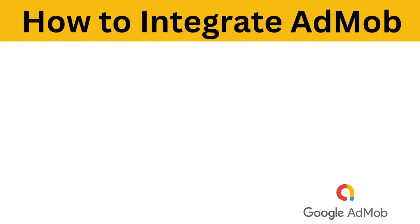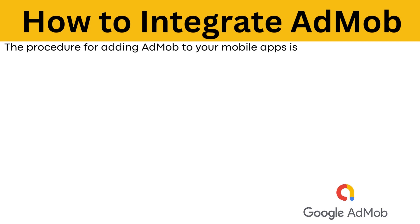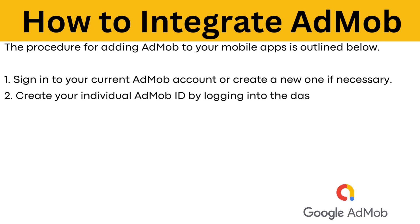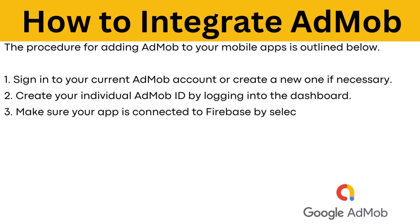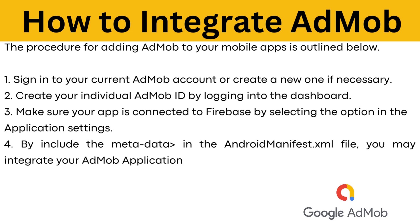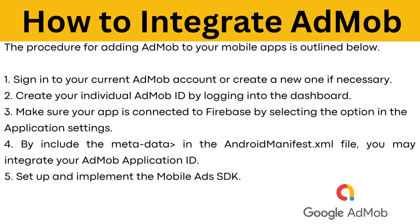How to integrate AdMob? First, sign in to your current AdMob account or create a new one if necessary. Then, create your individual AdMob ID by logging into the dashboard. Then, make sure your app is connected to Firebase by selecting the option in the application settings. Fourth, include the metadata — in the AndroidManifest.xml file, you may integrate your AdMob application ID. And lastly, set up and implement the mobile ads SDK.